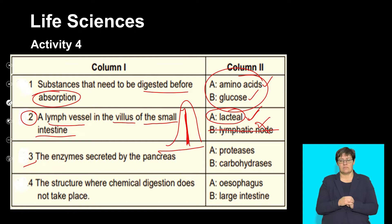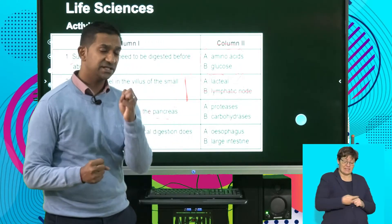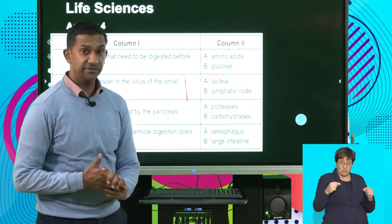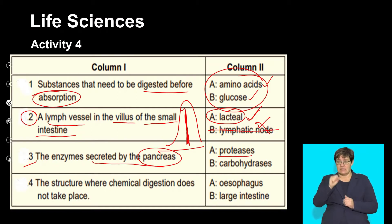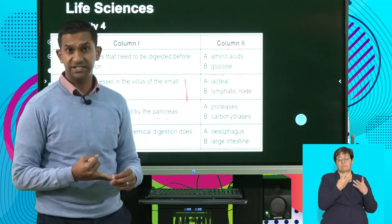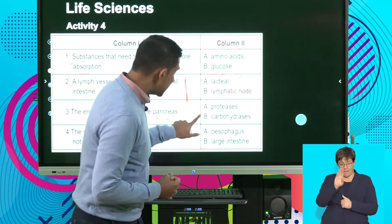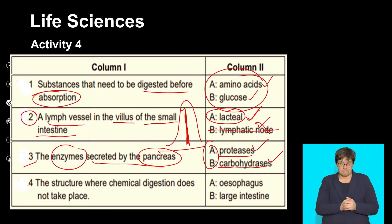3.3: The enzymes secreted by the pancreas. Remember that the enzymes produced by the pancreas are released into the duodenum. The options are proteases and carbohydrases. The pancreas produces enzymes responsible for completing both carbohydrate digestion and protein digestion. So both A and B are groups of enzymes released by the pancreas that are important in completing the process of digestion.